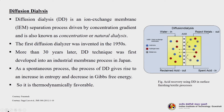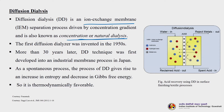Diffusion dialysis is an ion exchange membrane separation process. The membrane is an ion exchange membrane driven by concentration gradient, also known as concentration or natural dialysis — and mostly known as Donnan dialysis due to the Donnan equilibrium concept. The first diffusion dialysis was invented in the early 1950s; more than 30 years later it was first developed into an industrial membrane process in Japan. As a spontaneous process, diffusion dialysis gives rise to an increase in entropy and decrease in Gibbs free energy — it is thermodynamically a favorable separation.